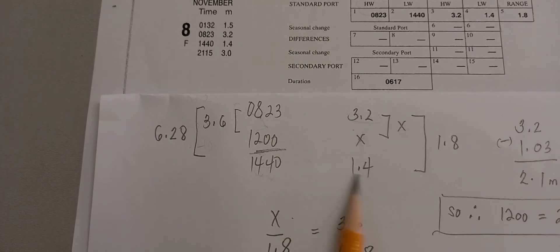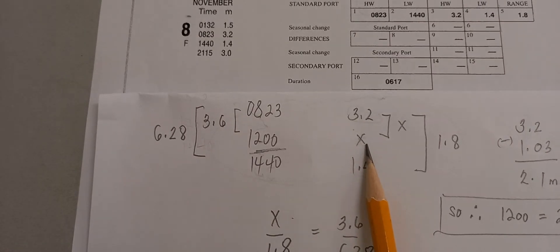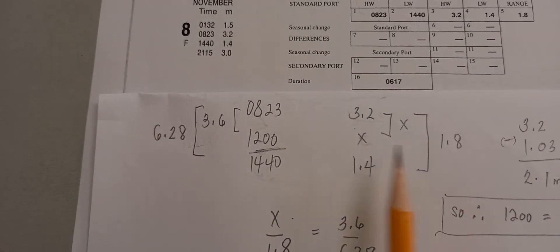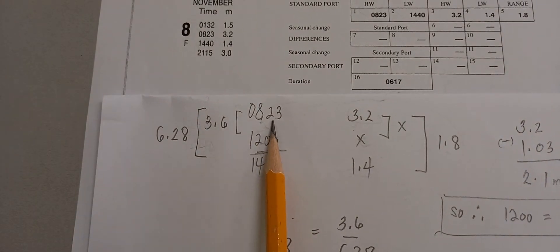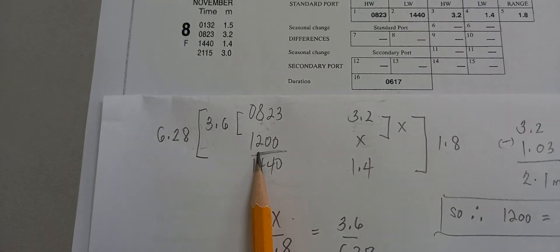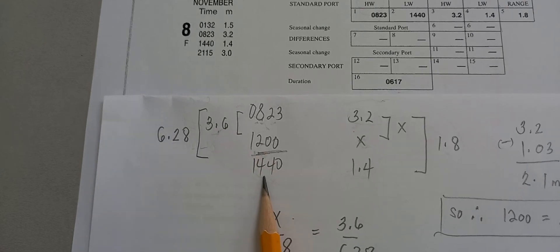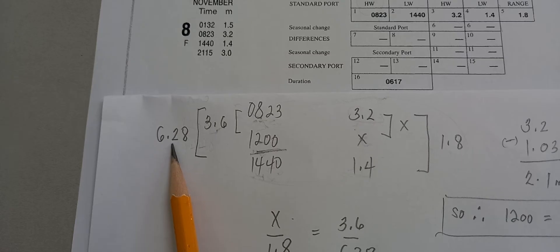Setting up the interpolation: 3.2 minus x over 3.2 minus 1.4 equals 1.8. Then, 1200 minus 0823 gives 3 hours and 37 minutes, which equals 3.6 hours. And 1440 minus 0823 gives 6 hours and 17 minutes, which equals 6.28 hours.